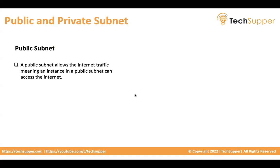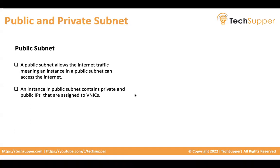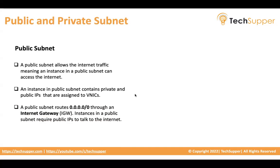An instance in a public subnet is assigned both a private IP and a public IP. When you create any resource such as a compute instance or database within the public subnet, the resource will be assigned both a public and a private IP. A public subnet routes 0.0.0.0/0 — meaning any internet resource — through an internet gateway. The internet gateway is an OCI concept that allows your resources to connect to the internet and receive traffic from the internet. Instances in a public subnet require a public IP to talk to the internet.